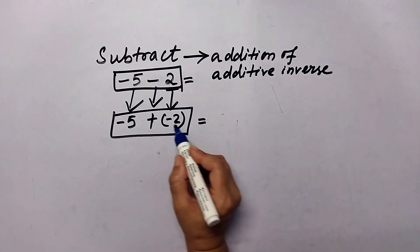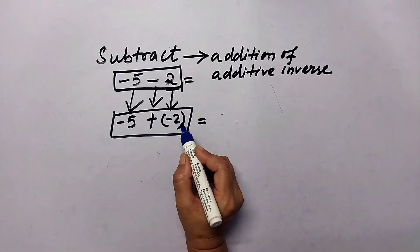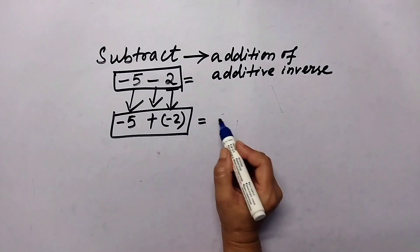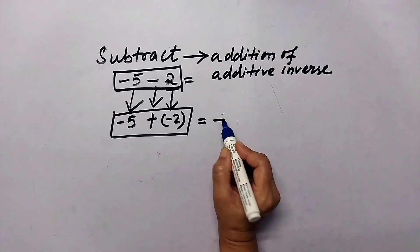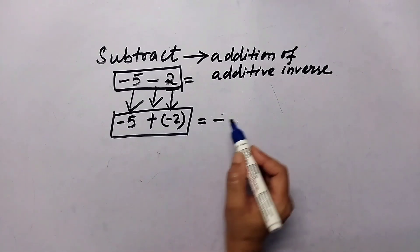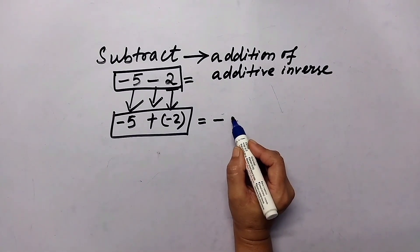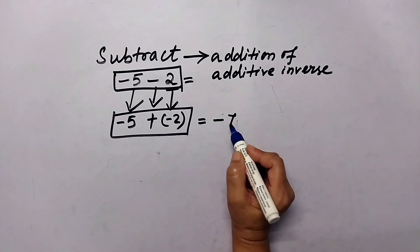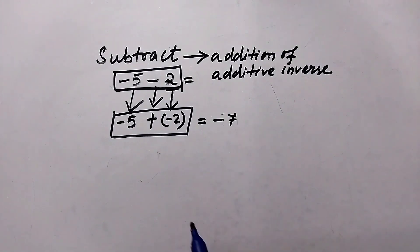So negative five minus two becomes negative five plus negative two. When both signs are the same, we keep the same sign and add the numerical values: that is equal to negative seven.